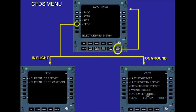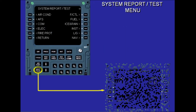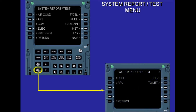The failure information is available in various reports. The reading of the failure information is made from two different MCDU menus, depending on whether the aircraft is in flight or on the ground. The system report test function is available on the ground only. It enables a dialogue between the CFDIU and a system computer. The system report test menu page presents the list of all systems connected to the CFDIU in ATA chapter order.